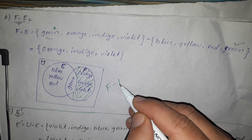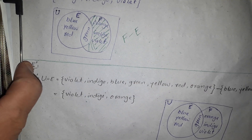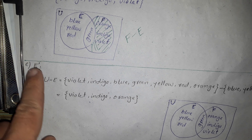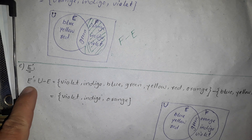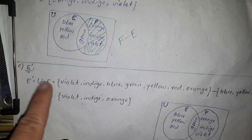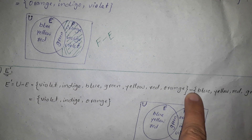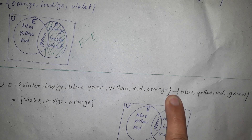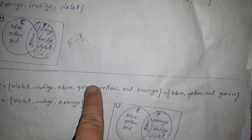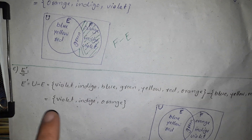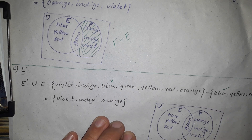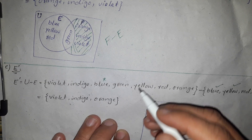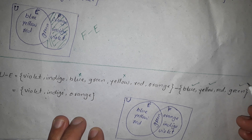The second part is E complement. We know E complement. We know the E diagram. U minus E will be equal to U set U. We know E. You know elements — the blue. You know, you know, you know.